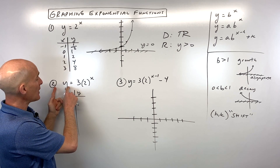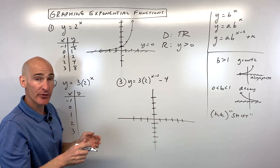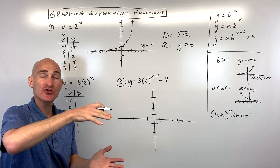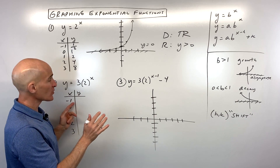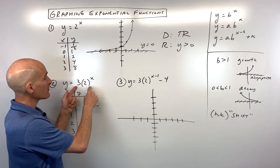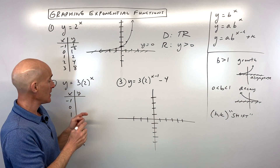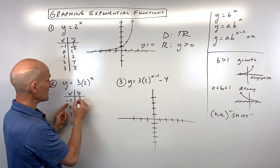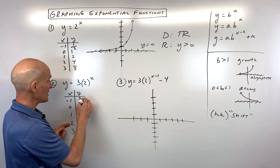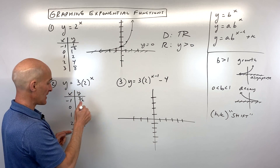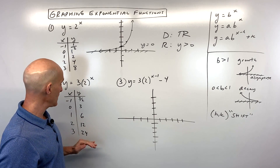For number two, y equals three times two to the x — building on the last graph. The three, because it's greater than one, is a vertical stretch by three times. Making a table, follow PEMDAS: do the exponent first, then multiply by three. So two to the negative one is one-half times three is three-halves; two to the zero is one times three is three; two to the one is two times three is six; two squared is four times three is twelve; two cubed is eight times three is twenty-four.